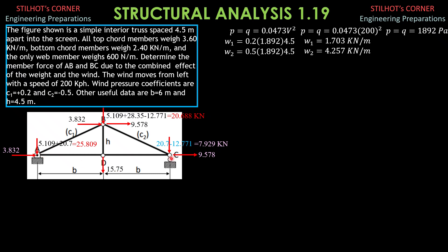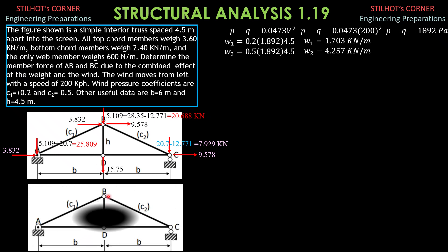Let's draw another truss and transmit the net forces as shown. At A: 3.832 kilonewtons rightward and 25.809 kilonewtons downward. At B: 3.832 plus 9.578 equals 13.41 kilonewtons rightward, and 28.688 kilonewtons downward. At C: 9.578 kilonewtons rightward and 7.929 kilonewtons downward. At D: 15.75 kilonewtons downward.